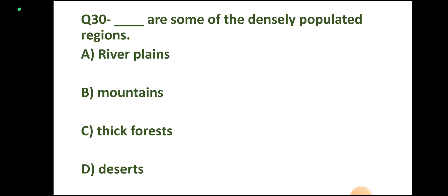Question number 30: Which are some of the densely populated regions? Options: river plains, mountains, thick forests, deserts. Correct answer: river plains, option A.